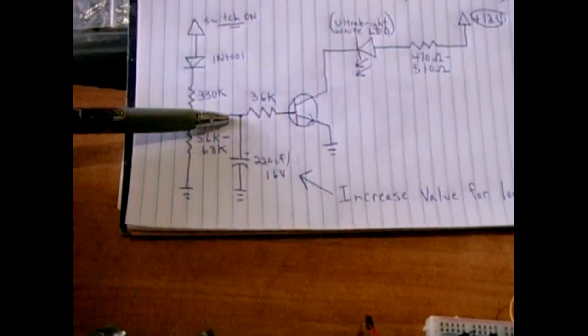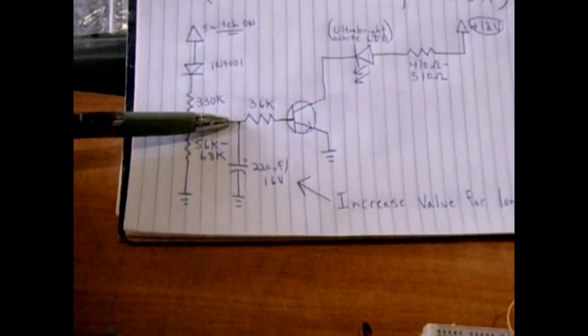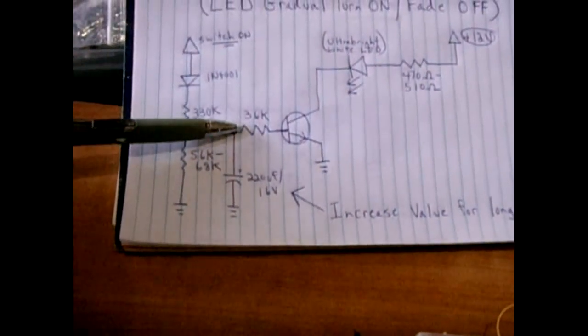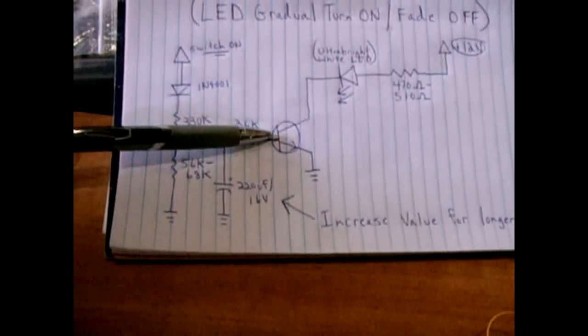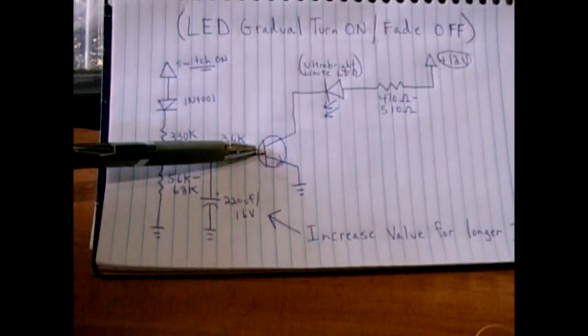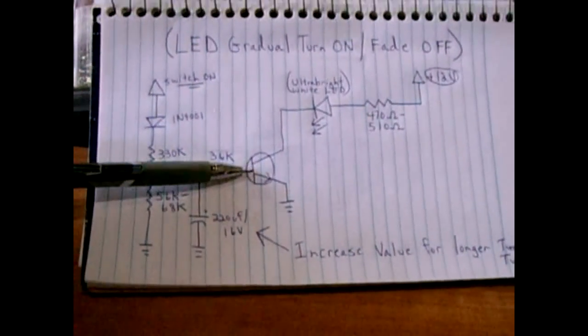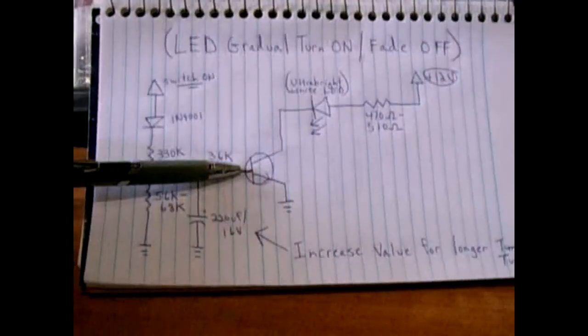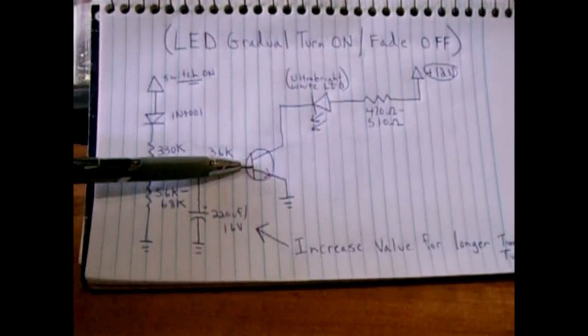At that junction point you will tie in a 36k resistor into the base of this transistor. This is just an NTE 123 AP or 2N3904, it could be a lot of different NPN transistors so give them all a try, it should work fine.